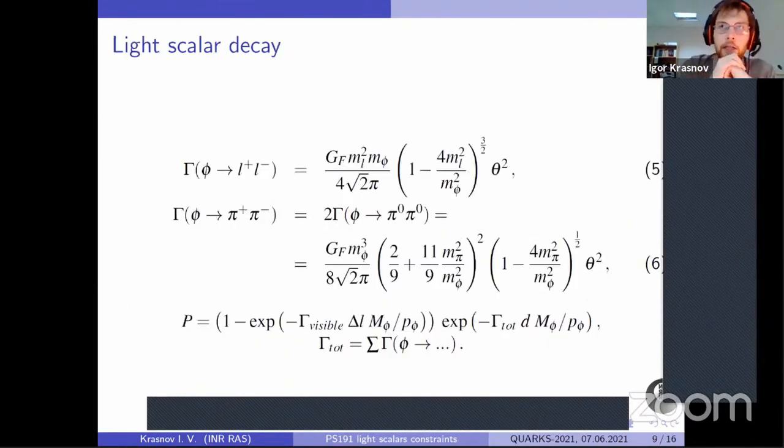Then they decay through several main modes. We omit here the photon mode which is irrelevant once other modes become accessible. The probability is pretty straightforward. We just need for that scalar to not decay before it reached our detector and decay while it is in our detector. That is represented in this formula here.